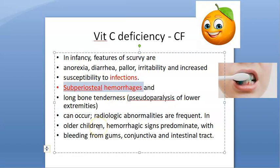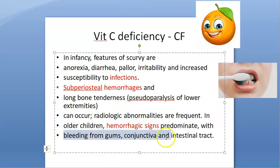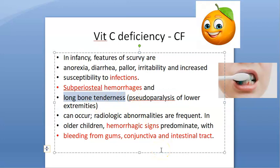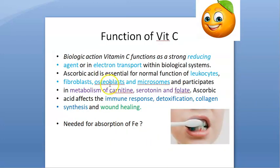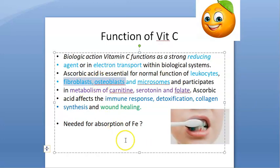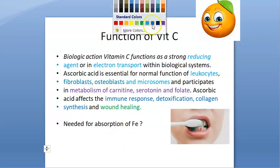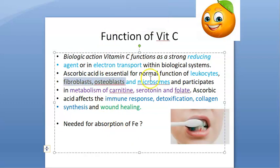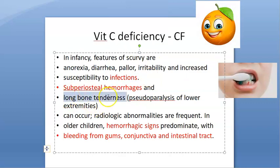You will get subperiosteal hemorrhage because of wound healing impairment and bleeding tendency. They will have hemorrhagic signs — bleeding from gums, conjunctiva, and intestinal tract. Long bone tenderness relates to osteoblast and fibroblast involvement.